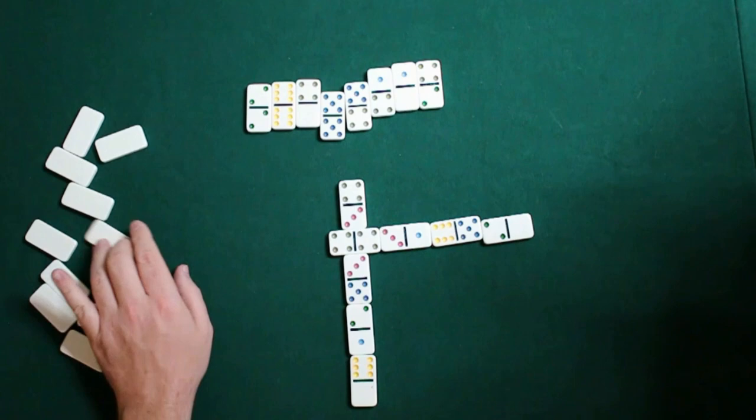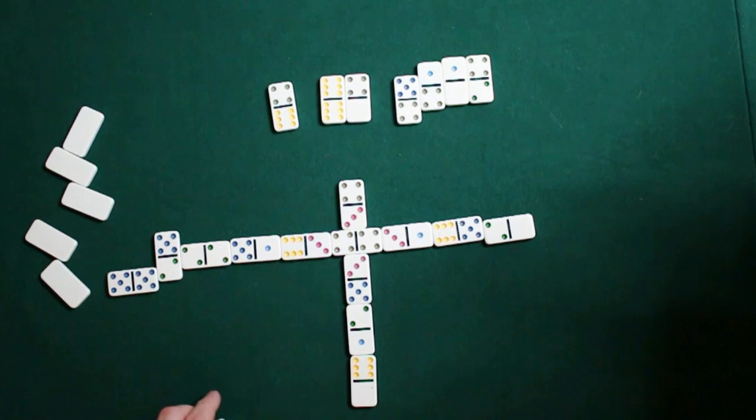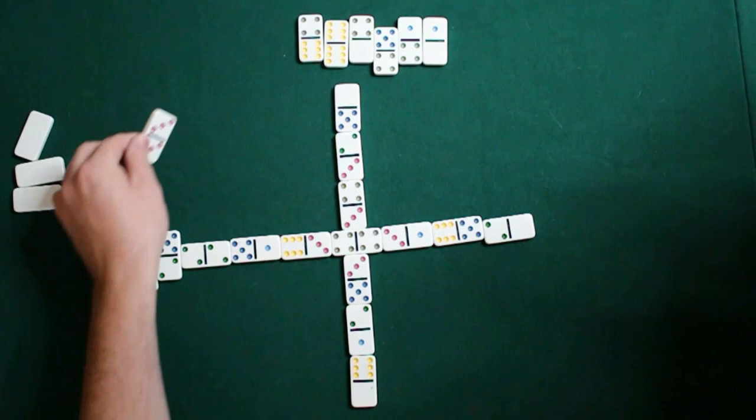So every round, you're drawing 6 dominoes into your hand until the game is over, or until the round is over at least. Until somebody has cleared out their hand, or the game locks up. The other possibility is that neither player can make a possible move. And if that happens, you're both going to be scoring positive points.